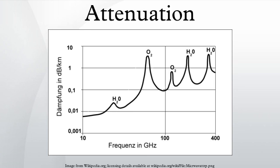In engineering, attenuation is usually measured in units of decibels per unit length of medium and is represented by the attenuation coefficient of the medium in question. Attenuation also occurs in earthquakes. When the seismic waves move farther away from the epicenter, they grow smaller as they are attenuated by the ground.